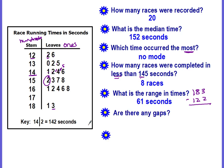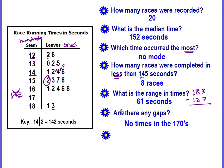Are there any gaps? A gap means: is there any place where there is no data? Even though we have a stem of seventeen, there are no leaves. In order for this to be a hundred and seventy, you would have to have a leaf of zero — there is no zero here, which means there are no times in the hundred-and-seventies section. So yes, there are gaps — no times are in the hundred and seventies.